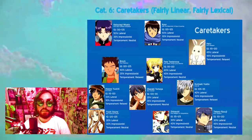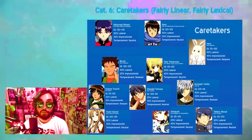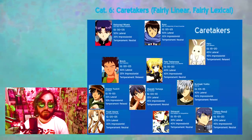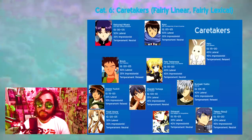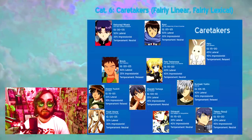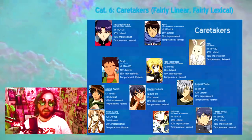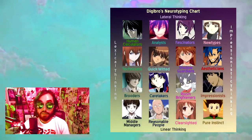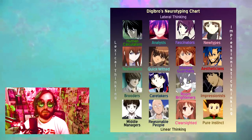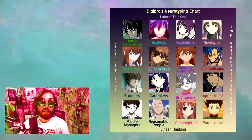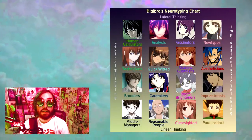Category 6: Caretakers — Fairly Linear, Fairly Lexical. The four categories in the center of the chart are inevitably some of the rarer ones to find in anime simply because it almost requires nuance in their characterization. When I first created this category and called it Caretakers, every anime character I could find who fit it could also perfectly be described by the word caretaker in some sense. Considering their placement on the chart, it makes sense — they're in the best position out of any neurotype to understand the largest number of other neurotypes and to help organize and codify those people's ideas.